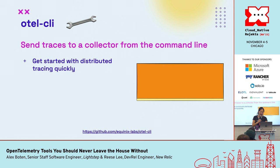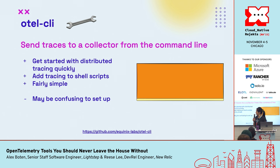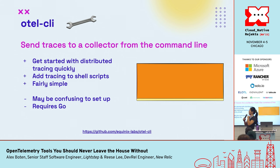OTEL CLI is a good tool for getting started because it allows you to get started with distributed tracing quickly. You can easily add tracing to your shell scripts as well as other applications that don't support tracing natively. However, it requires a few things to set up, including a working Go environment, so it may still be a little confusing depending on your familiarity with Go.